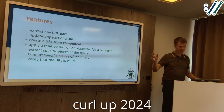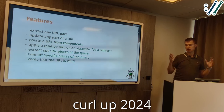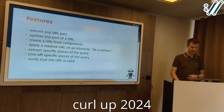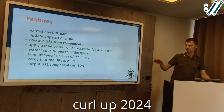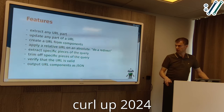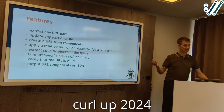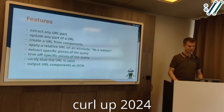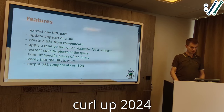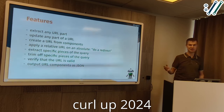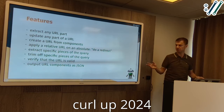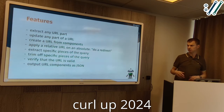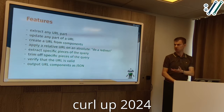You can even sort the query parts and get a canonical version of the URL, or compare two different URLs to see if they're different, or verify that a URL is valid — valid according to trurl's definition. And everyone likes JSON these days, so you can output everything as JSON: parse a URL and output all the components as a JSON object. That's useful for shell scripting if you want to use jq and so on.